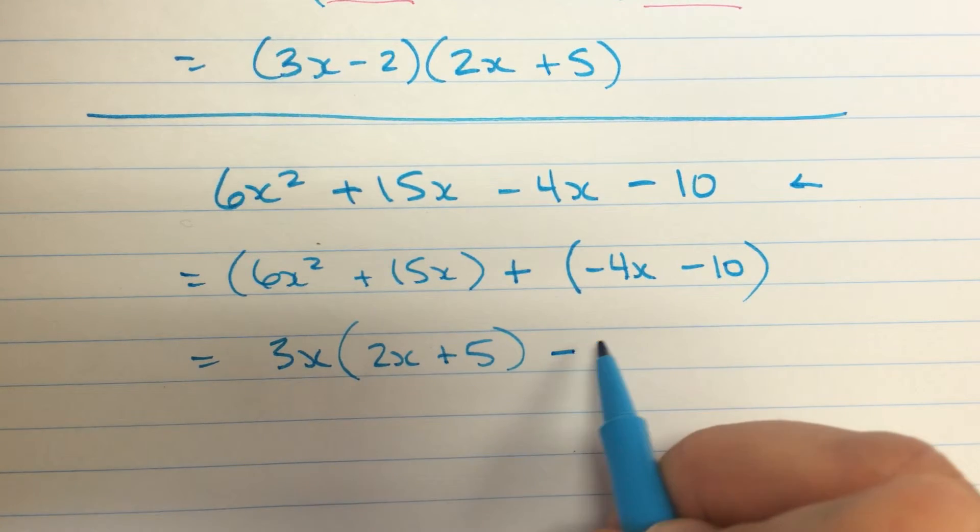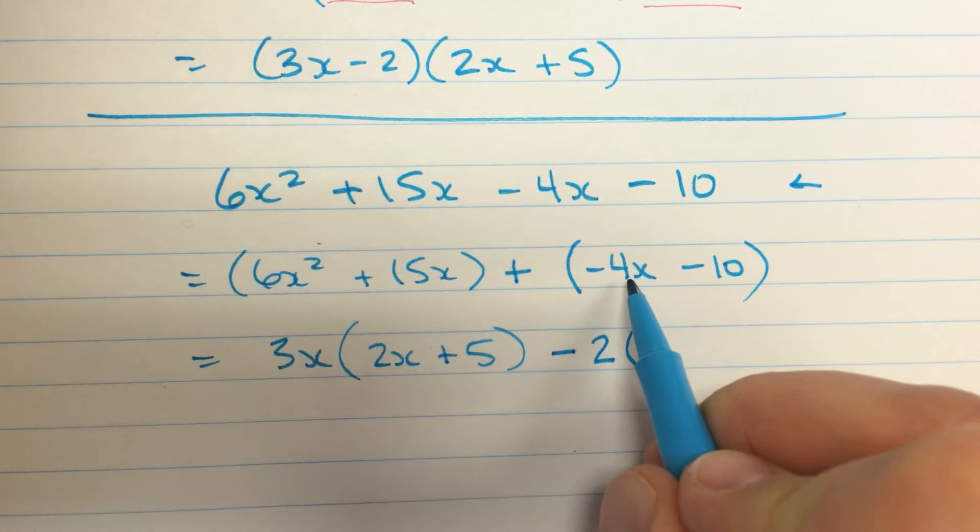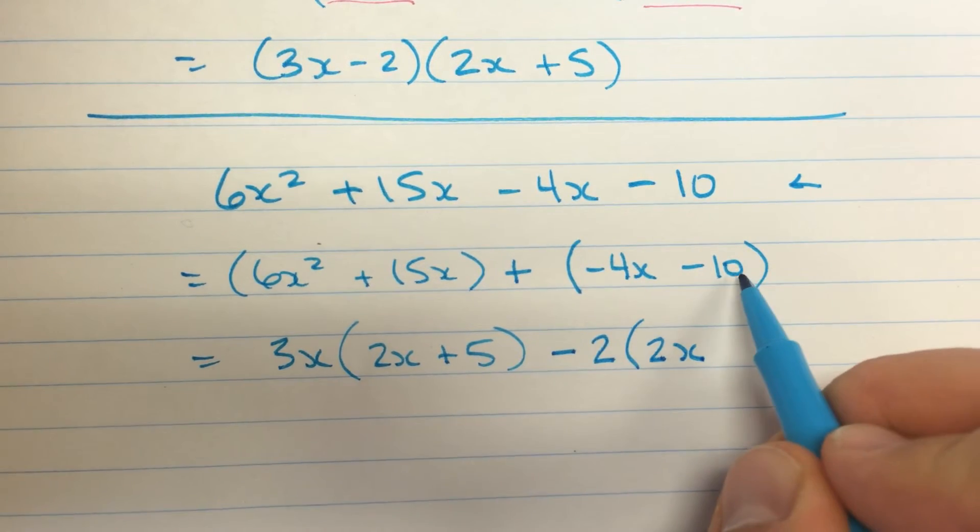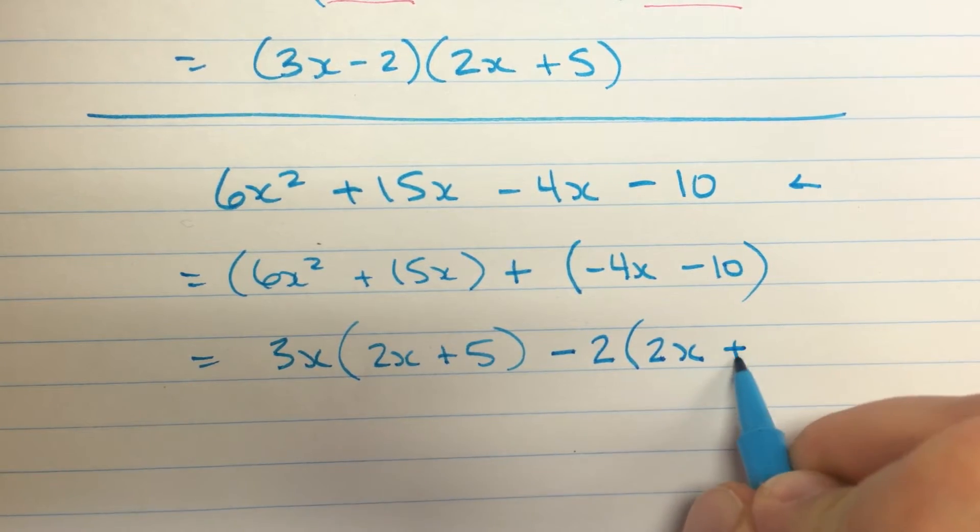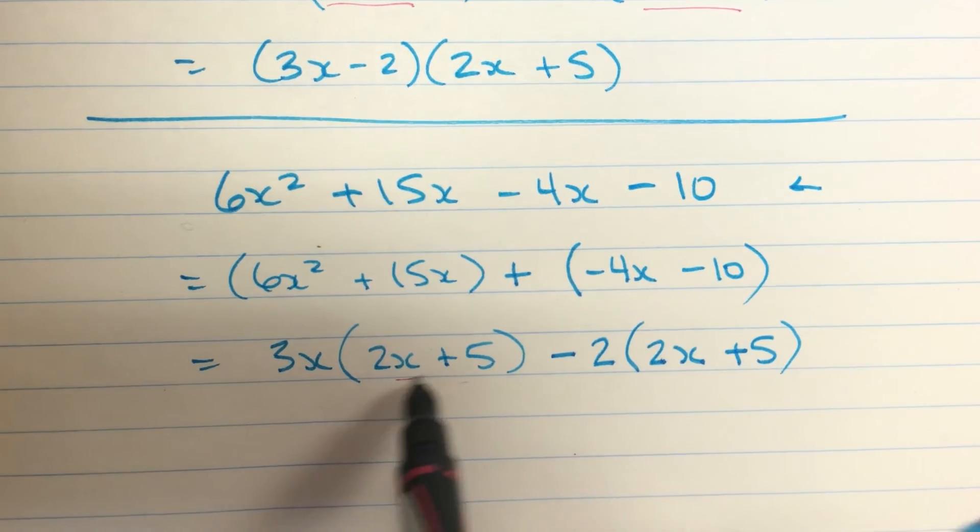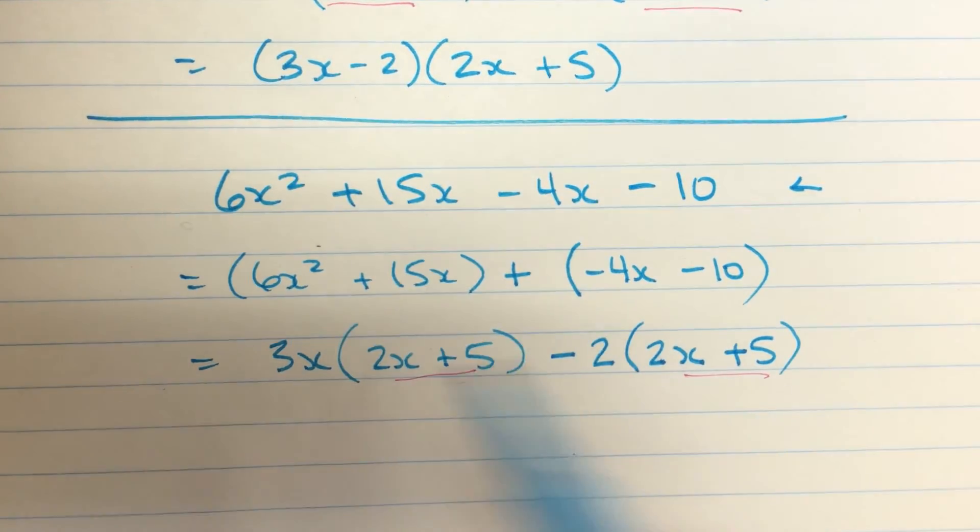So I'm going to do that. Minus 2. Negative 4 divided by negative 2 is 2. And I still have my x. Negative 10 divided by negative 2 is positive 5. And yep, sure enough, we get a common factor. It's not the same common factor, but it's a common factor. What happens?